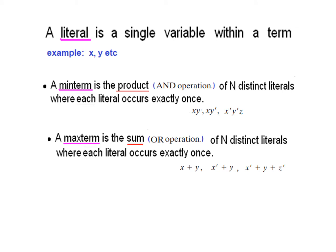Similarly, a max term is the sum, or OR operation, of n distinct literals where each literal occurs exactly once. So it is OR operation or plus operation: x OR y, or x' OR y, or x' OR y OR z'. These are all max terms. An easy way to remember: min terms take less space and max terms take more space.